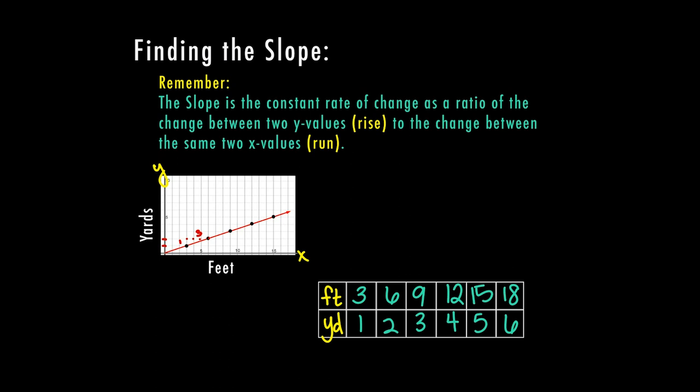But let's say that I want to go from this point to this point. I don't have to go consecutively in order. So if I go here and I want to find my rise over run, I'm going to go from this y value up to this y value.